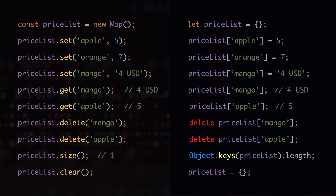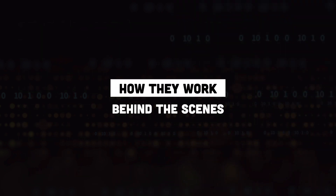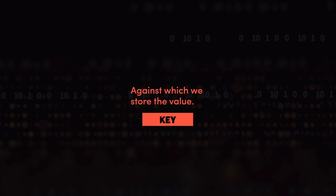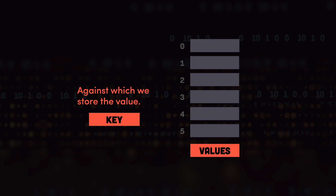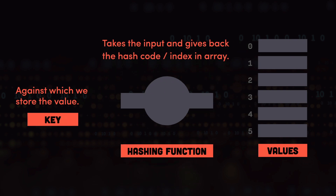Now that we know what hash tables are, the implementation, and the different operations you can perform on them, let's understand how they work behind the scenes. Most languages already have the implementation for hash tables built in, but it's still a good idea to know what's going on. A hash table has three main parts: the key, the value, and most importantly the hashing function. Behind the scenes there is a simple array in which we store the values for each key. The job of the hashing function is to take the input key and give back a hash code which maps to the index of the array at which we will store the value for that key.